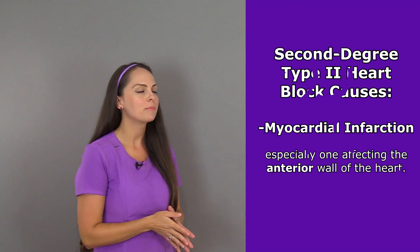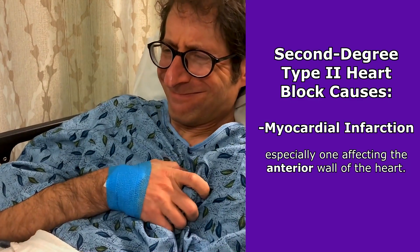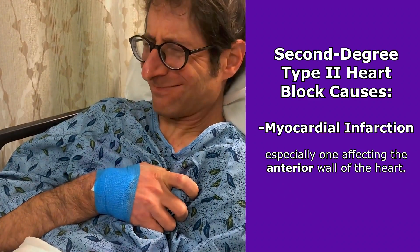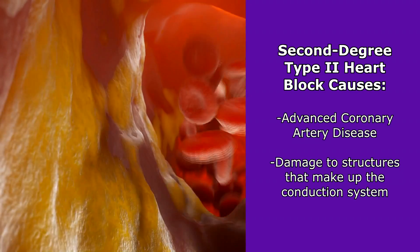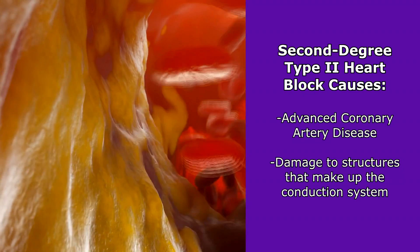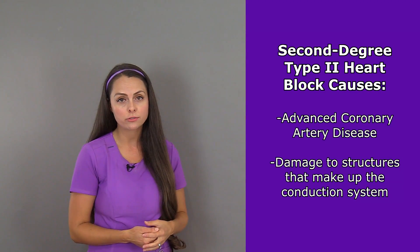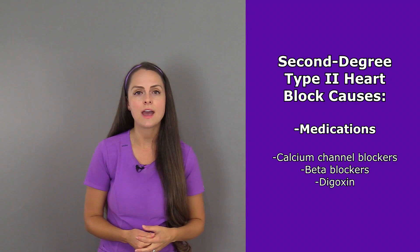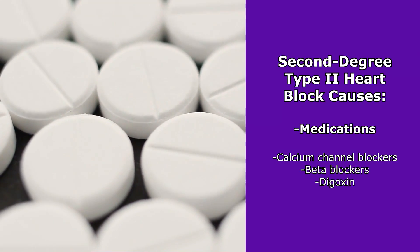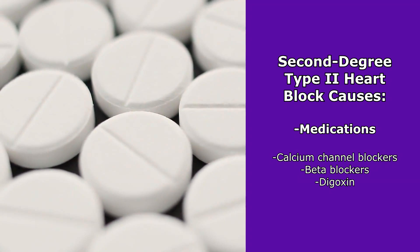What are some causes of this type of heart block? An acute myocardial infarction can cause this, especially one affecting the anterior wall of the heart. Advanced coronary artery disease, structural damage to the electrical conduction system, and medications that slow AV conduction — such as calcium channel blockers, beta blockers, and digoxin — are also common causes.